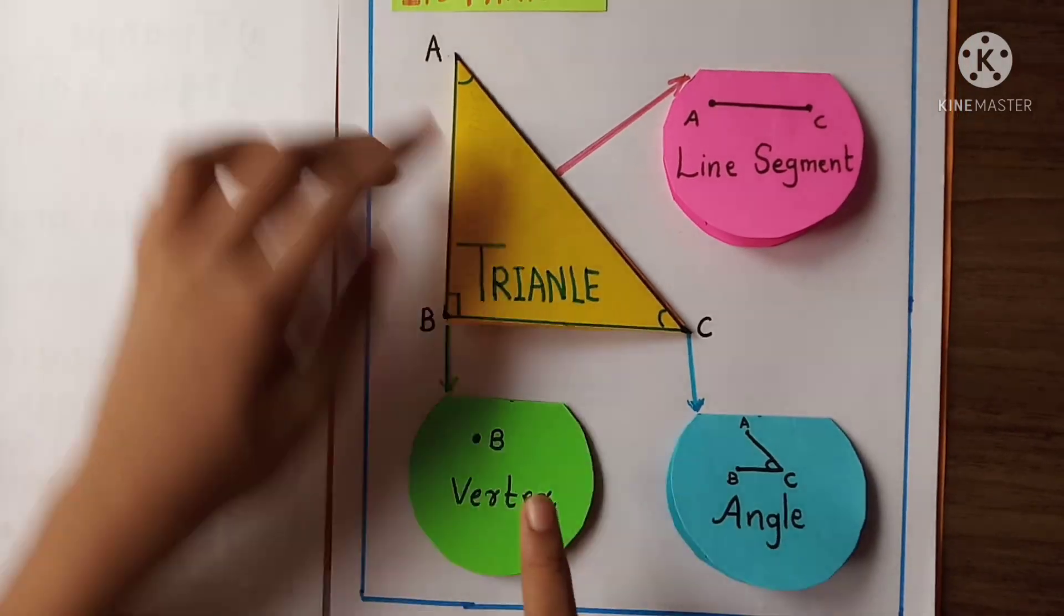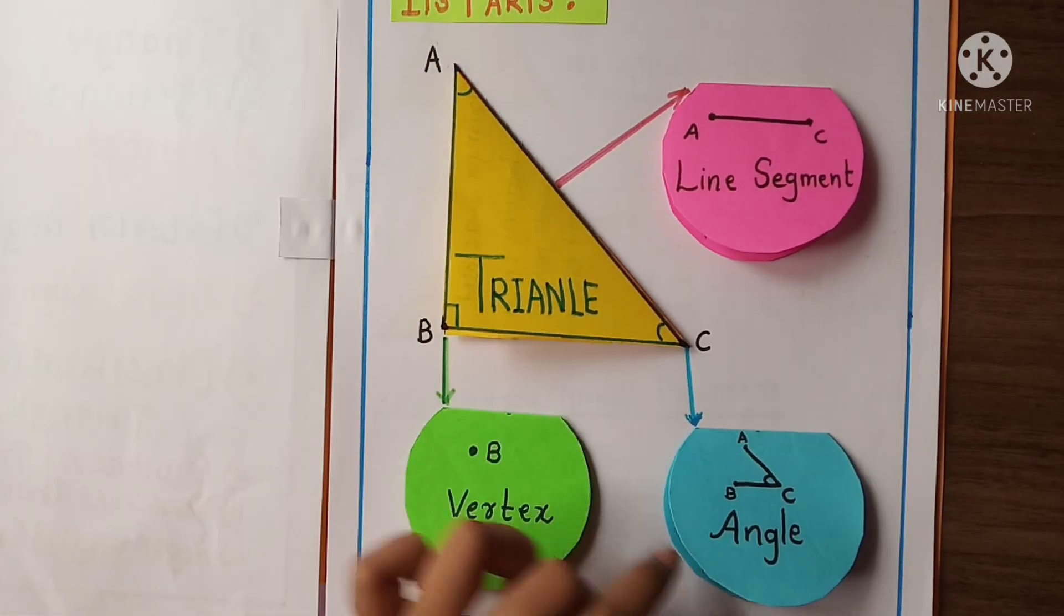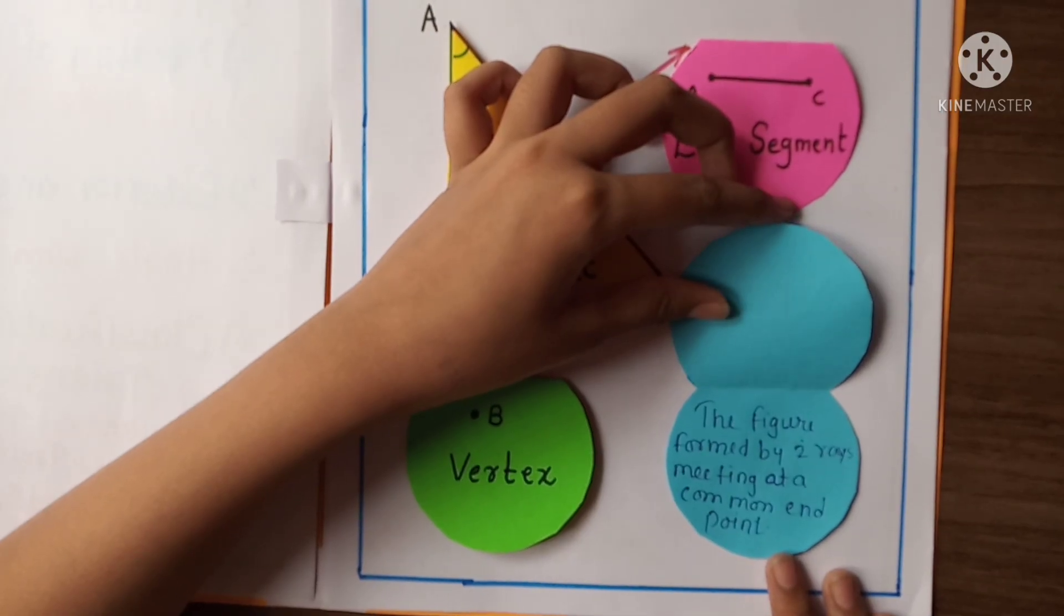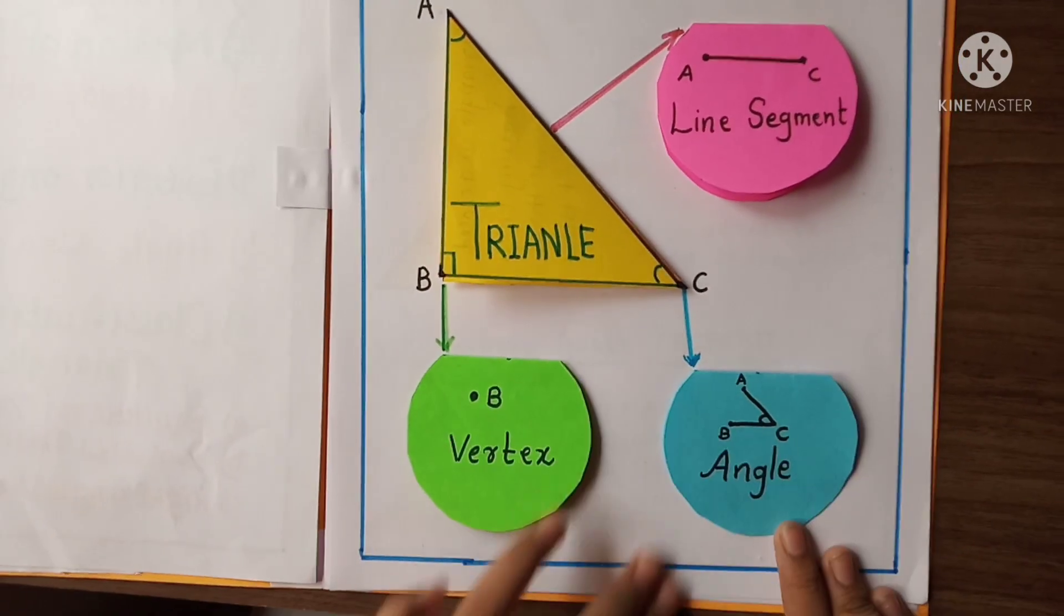Here is the angle, angle ACB. Let's see the definition. The figure formed by two rays meeting at a common end point is called an angle.